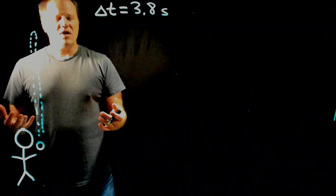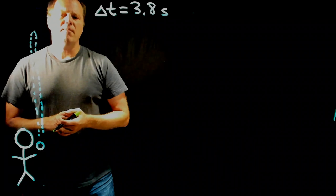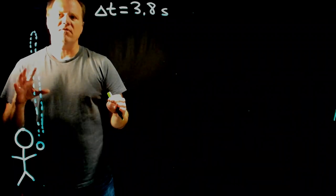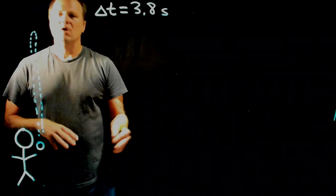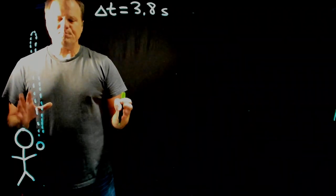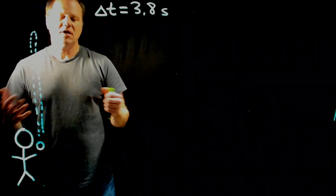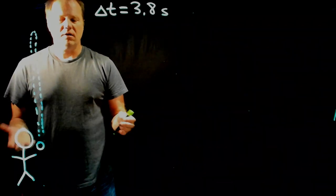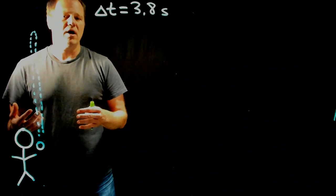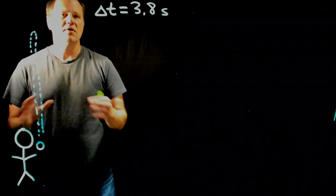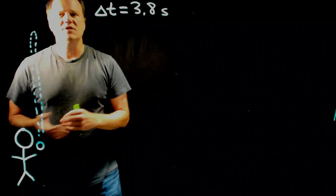The constant acceleration kinematics equations, which we're going to be using, have four variables in them. That means we need to know three things before we can do any algebra or calculations. A common mistake people make in kinematics is trying to find an equation first, then thinking about what they know. So let's do information gathering first.